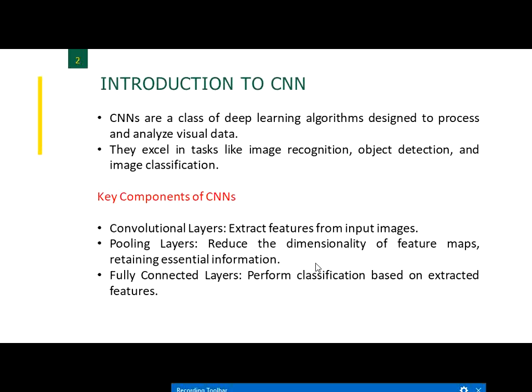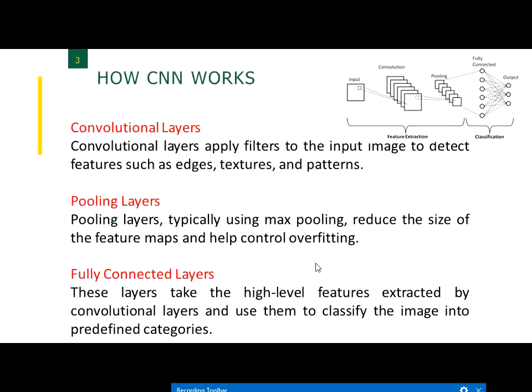CNN has three key layers: convolutional layers, pooling layers, and fully connected layers. The convolutional layer extracts features from input images, the pooling layer reduces the dimensionality of feature maps while retaining essential features, and the fully connected layer performs classification based on the extracted features.